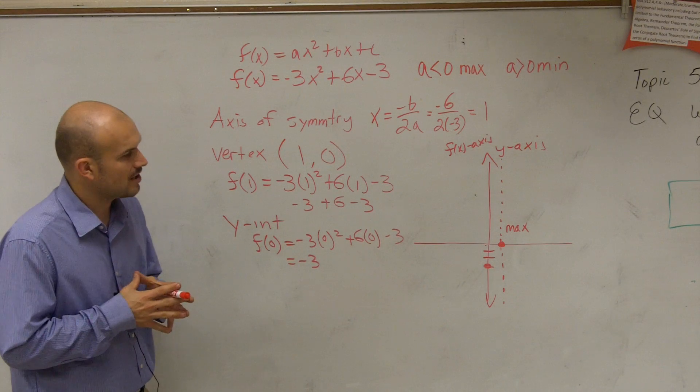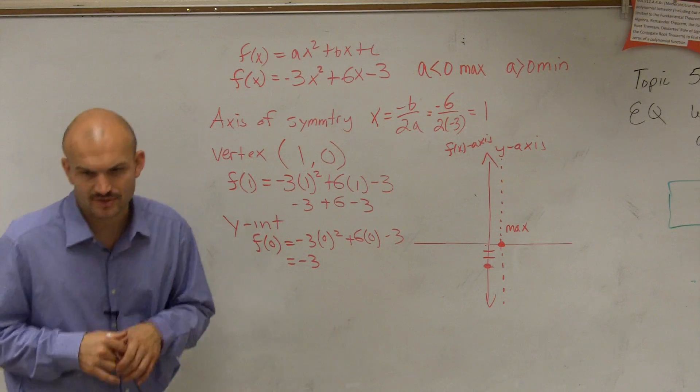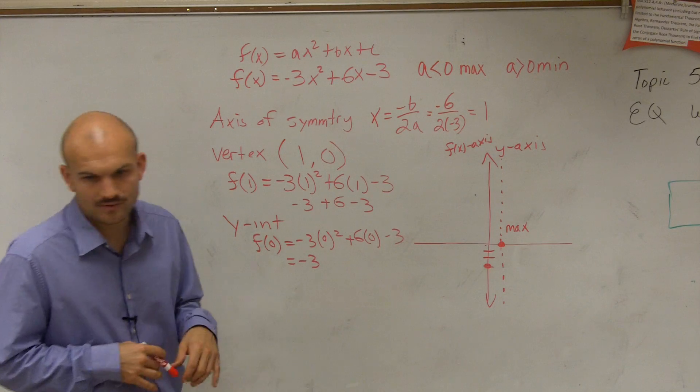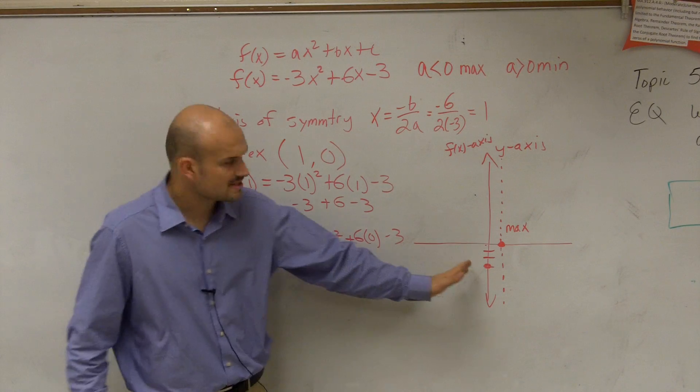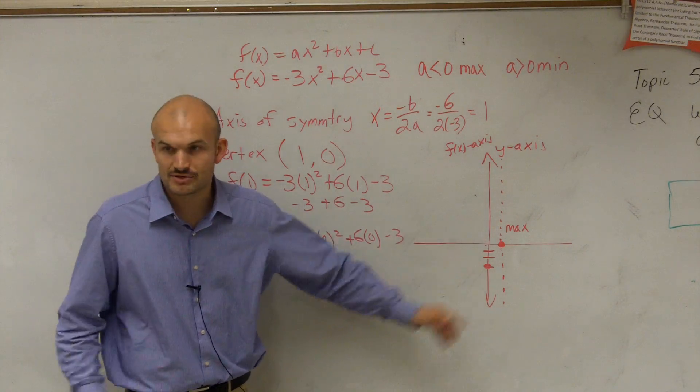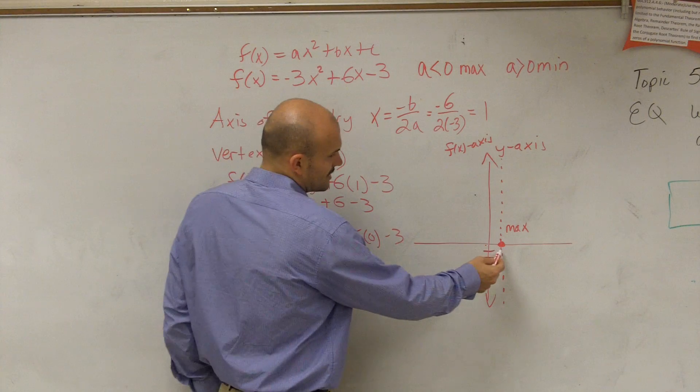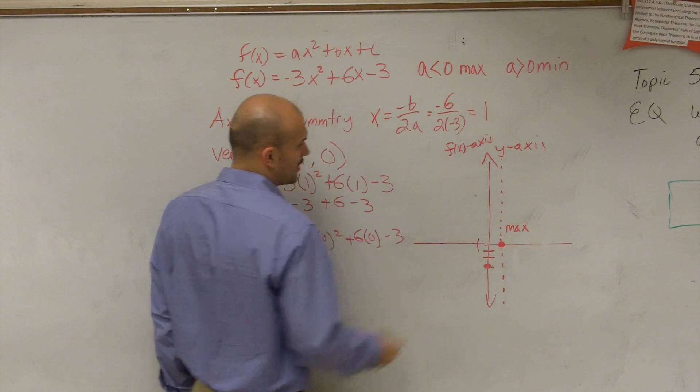So what we have so far is - well, they're not asking for a table of values. So I'm just going to run with what we have. So remember, this is a line of symmetry, right? Right now, if I wanted to connect these two points, actually, let's figure out one more point.